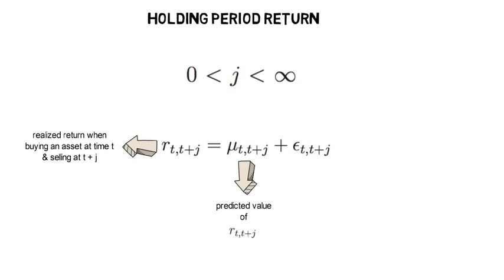Now μ_{t,t+j} is the predicted value of r_{t+j} as of time t, which we can also write as the expectation of r_{t+j} conditional on F_t.